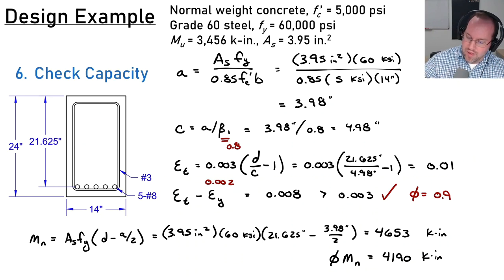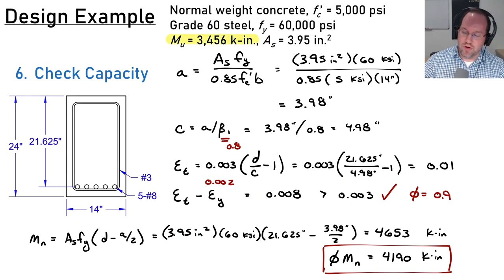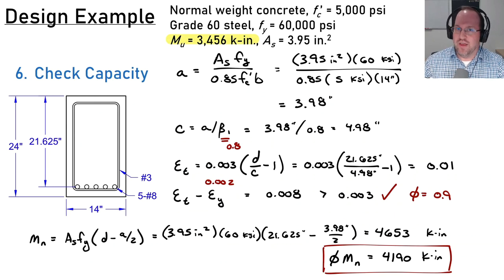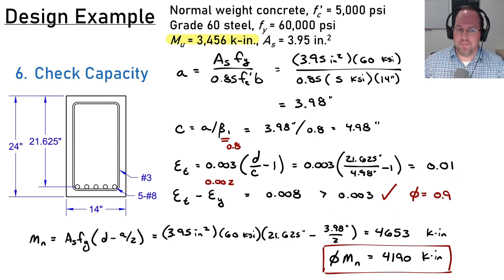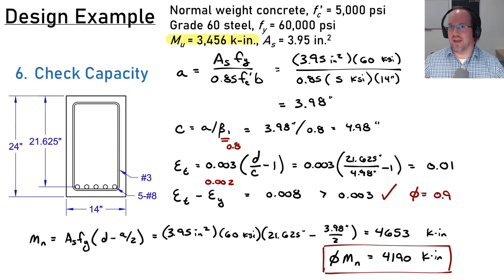The design capacity of 4,190 kip-inches exceeds the demand of 3,456 kip-inches — so this design works, and by a decent margin. This means I might consider going back to iterate, reducing the amount of steel or even reducing the section size. And that is how you calculate the required area of steel in a reinforced concrete beam. I hope you learned something — please subscribe and I'll see you next time.